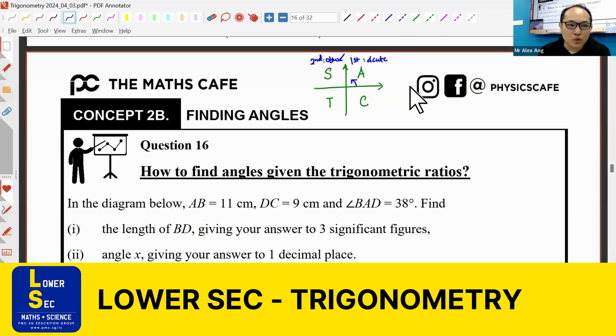We don't need to go into reflex angles. Acute and obtuse are good enough. The letters stand for something: A means all, S means sine, T means tangent, and C is cosine.